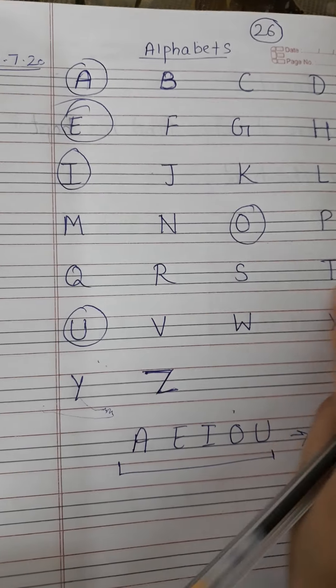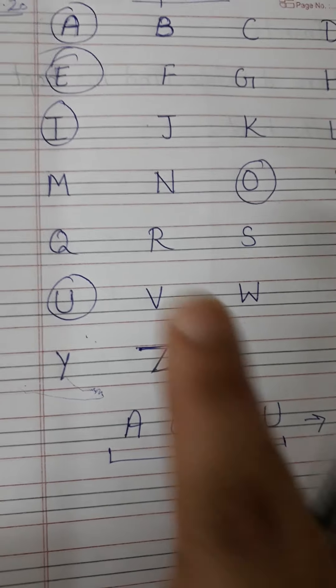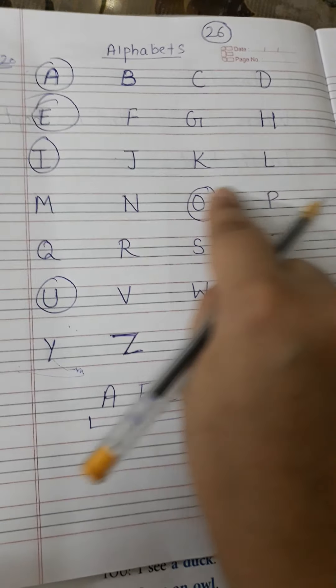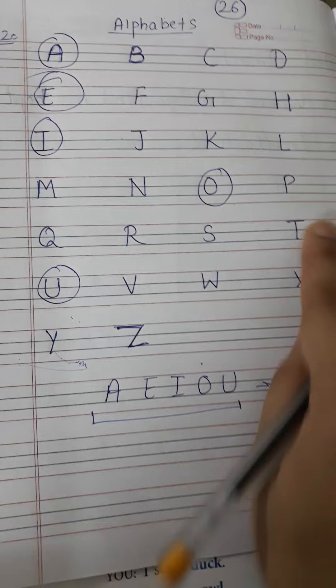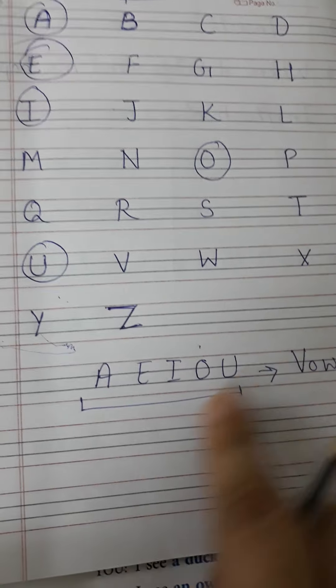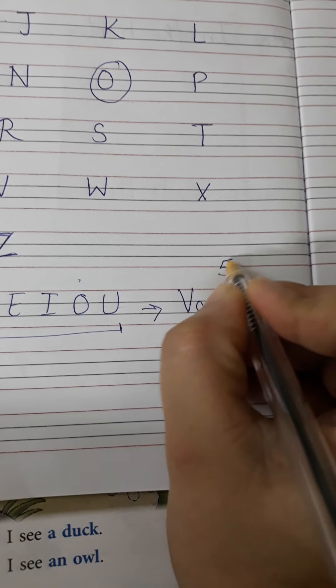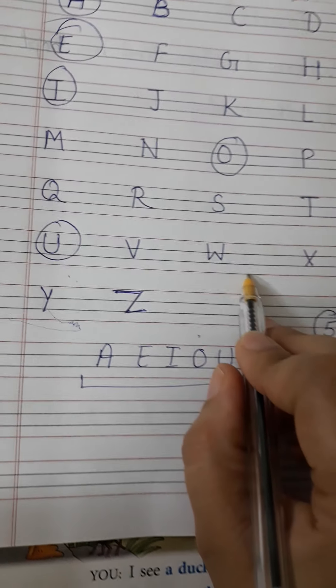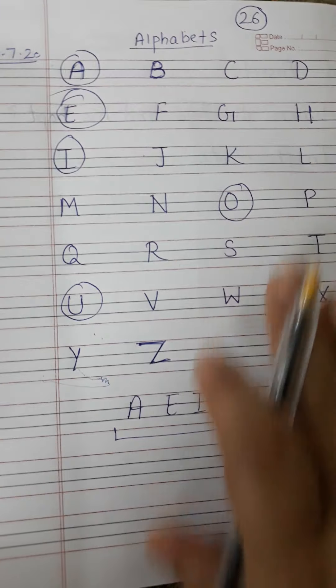And rest of all the letters are called consonants. All the other letters like B, C, D, F, G, H, J, K, L, M, N, P, Q, R, S, T, V, W, X, Y, and Z. These all are called consonants and these are the vowels. So how many vowels do we have? 5. And how many consonants do we have? 21. Right?